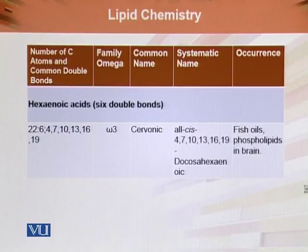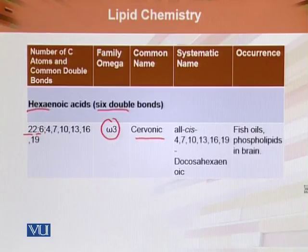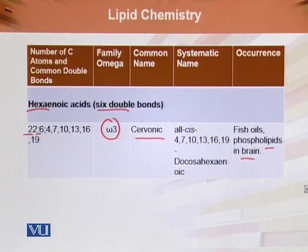The hexaenoic acid has six double bonds, as the name 'hexa' indicates. This is docosahexaenoic acid (DHA), a 22-carbon compound with six double bonds, and it is again an omega-3 fatty acid. It is present in fish oils, phospholipids, and in the brain. This concludes the brief introduction to the different physiologically important fatty acids.